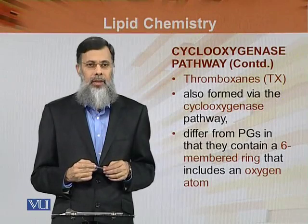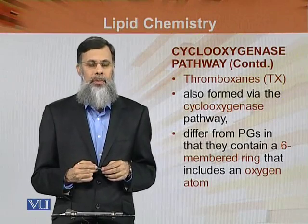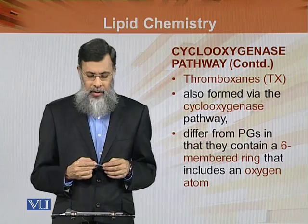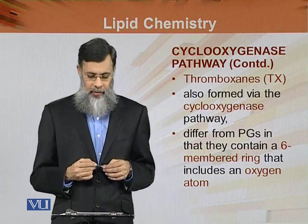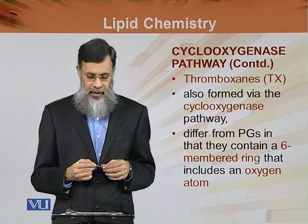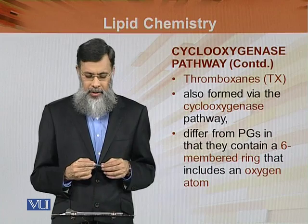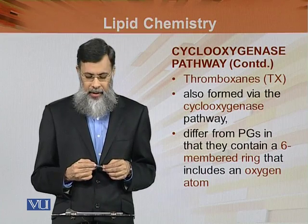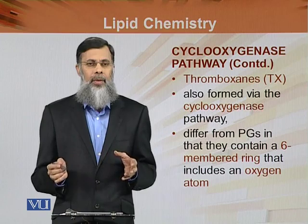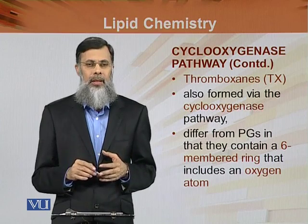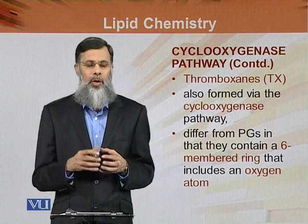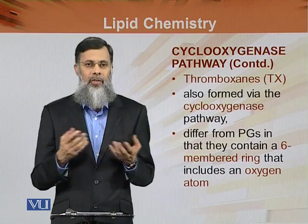We will continue with the cyclooxygenase pathway for the formation of the prostaglandins or the eicosanoids. Thromboxane is also formed by the cyclooxygenase pathway of the eicosanoid formation. Thromboxane differs from the prostaglandins in that they contain a six-membered ring that includes an oxygen atom. The major structure of prostaglandins was a five-membered ring with substituents at carbon nine and ten.